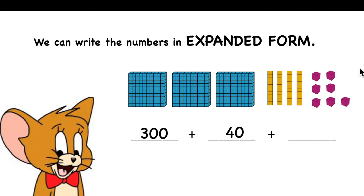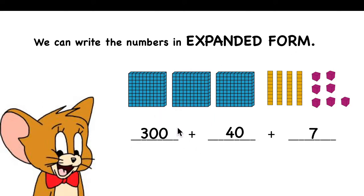And now the last one — we go to ones. How many ones do you have? 1, 2, 3, 4, 5, 6, 7. Seven ones. We write it just as the number 7. So, expanded form is an addition sentence where you add hundreds and tens and ones separately. This is called expanded form.